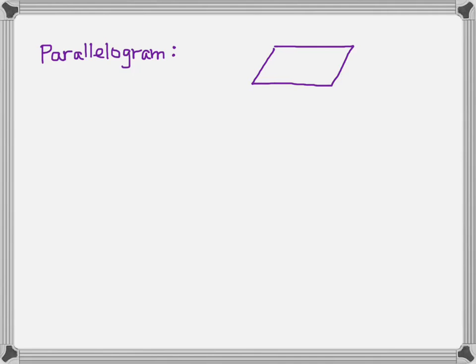Let's start by reviewing the shapes parallelogram and parallelopiped. A parallelogram has two sides that are parallel to each other — meaning they have the same slope — and the other two sides are also parallel to each other. If this is the origin, then our columns of A are going to be defined by the two vertices that share an edge with the origin.